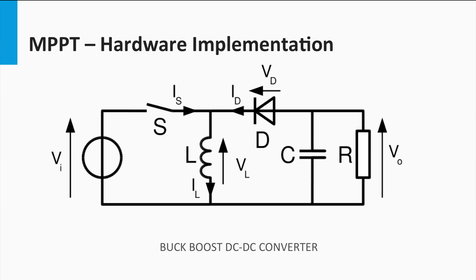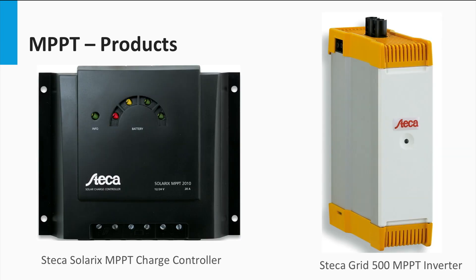Usually, a DC-DC converter is used for implementing the current or voltage regulation at the PV output. A typical example from power electronics is the buck-boost DC-DC converter, like the one shown here. The algorithm needed to decide what voltage and current to force the PV output to could be any of the ones discussed here or several others from the literature. In modern PV systems, the function of maximum power point tracking is often implemented within other system components like solar inverters and charge controllers, as shown here.